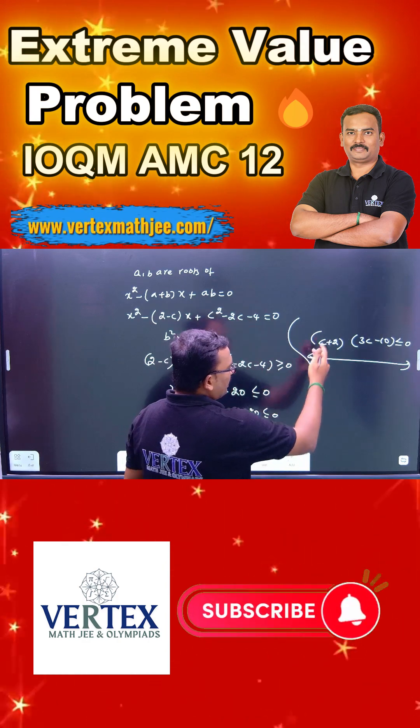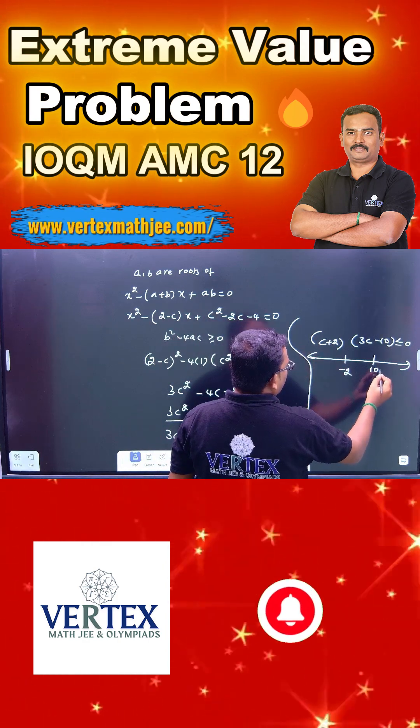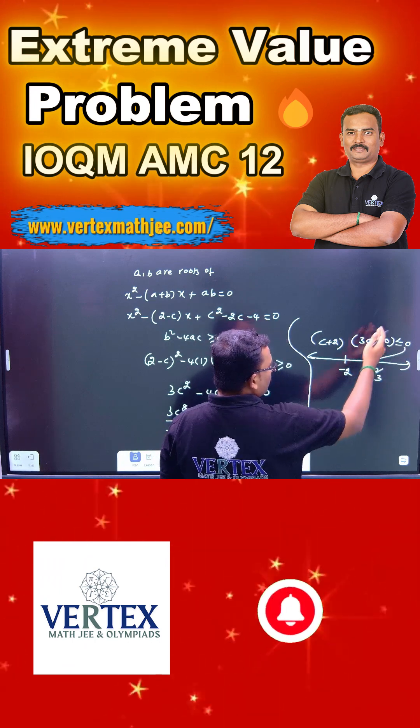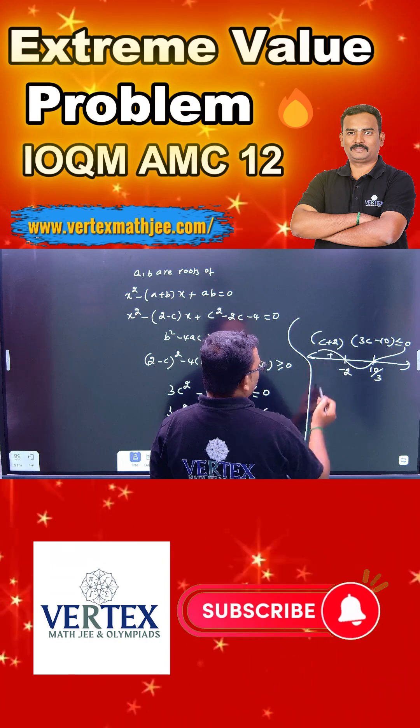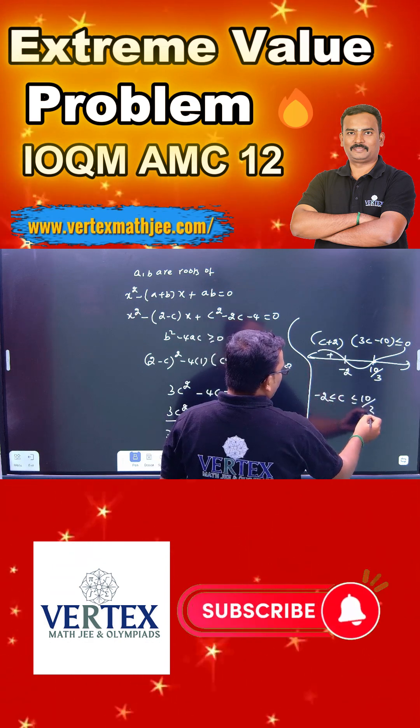Draw the number line. You can fill the critical points, minus 2 and 10 by 3. Now you can use the wavy curve method. Start with a positive because odd powers, each term is odd power. Change the sign. At minus 2 also odd power, change the sign. Therefore, c is minus 2 to 10 by 3.